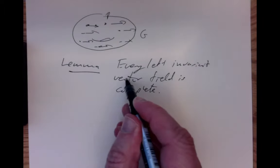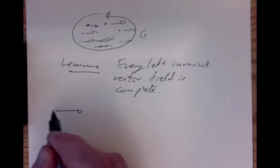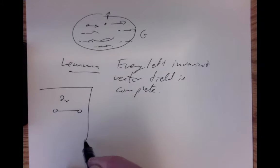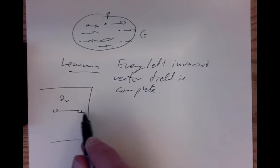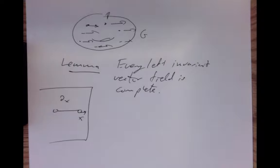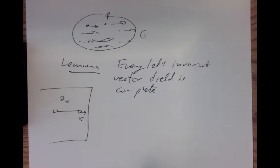Some vector fields are incomplete. For example, on the unit interval, if we took the vector field which is translation in the x variable on the x-axis, we'd in finite time run to the end of it. So it's possible to have a manifold and a vector field where you run off the edge of the manifold in finite time. That doesn't happen with left-invariant vector fields.